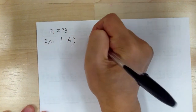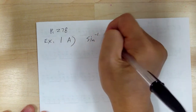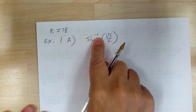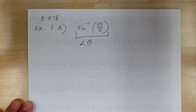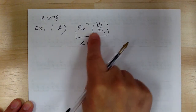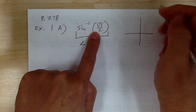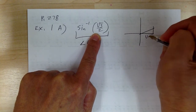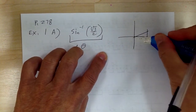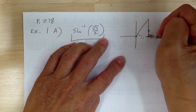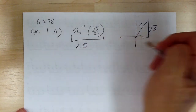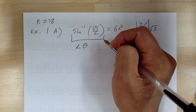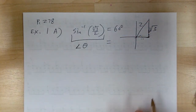Problem 1a: inverse sine of square root of three over two. As soon as you see an inverse trig function, right away think of it as an angle theta. So you draw your triangle. This is the sine function, so it's square root of three over two. That angle would be 60 degrees. Most of the time we use radians, so this would be pi over three.